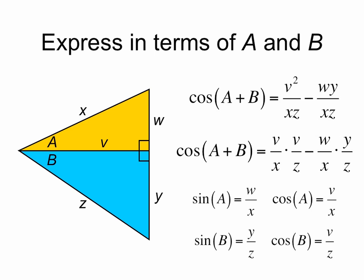And we'll note that the sine of a in our triangle on top is w over x, and the cosine of a is v over x. Similarly, in the bottom triangle, the sine of b is y over z, while the cosine of b is v over z.